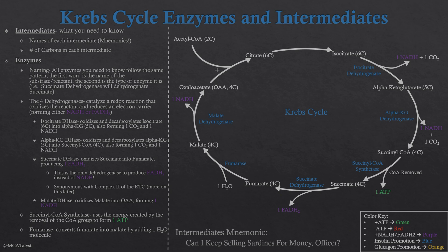Once we have malate, we run it through the last dehydrogenase: malate dehydrogenase. This oxidizes malate into oxaloacetate (OAA), still a four-carbon molecule, and in doing so reduces NAD+ into NADH. So per acetyl-CoA through the Krebs cycle we form three NADH, one FADH2, two carbon dioxides, and one ATP. Per glucose, since every glucose forms two acetyl-CoA, the Krebs cycle produces six NADH, two FADH2, four carbon dioxide, and two ATP. Knowing the intermediates by mnemonic and their carbon counts should help with virtually every related question.